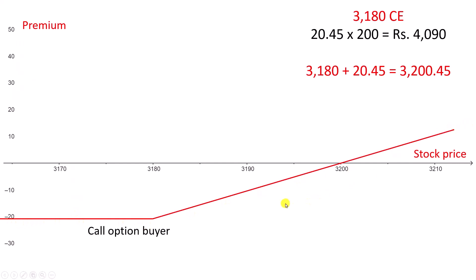This red line shows you the profit of a call option buyer. This is at minus 20.45 — it is the amount that the call option buyer has paid the seller. Initially, when I buy the option, I will be at a loss. I will be at a loss because I have paid 20.45 into the lot size to the seller. So minus 20.45 is my loss initially.